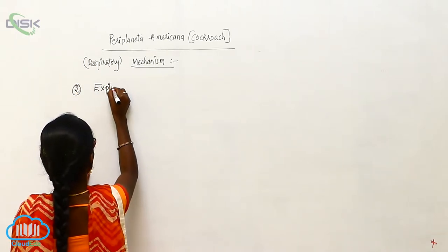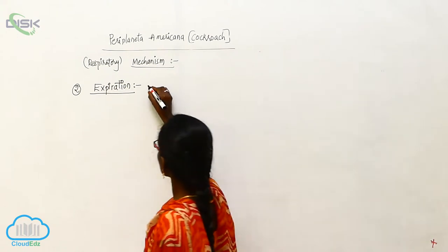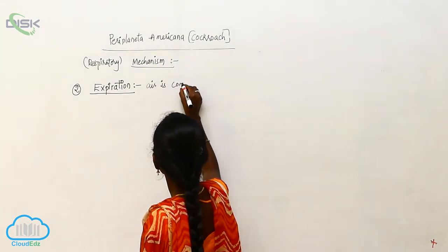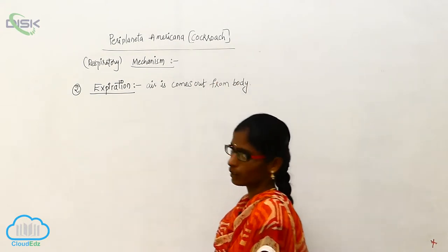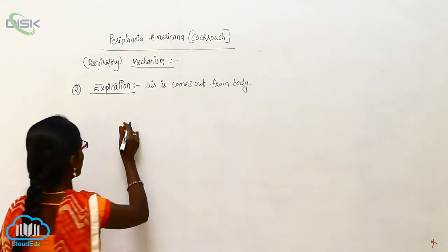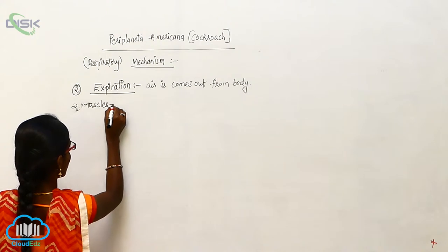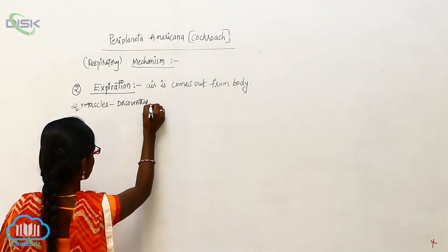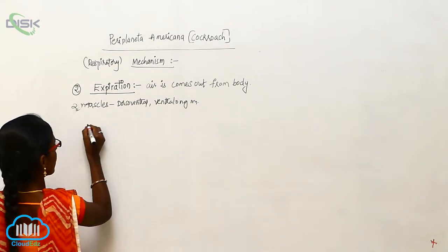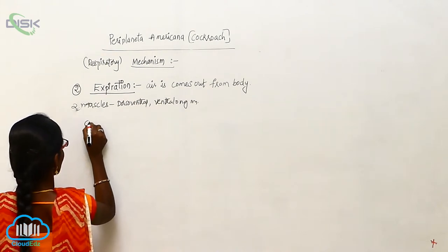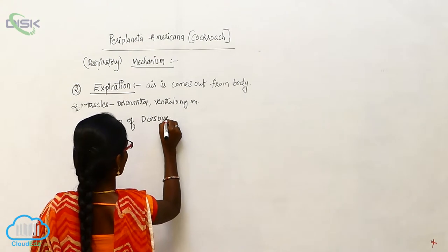The second process is expiration. In expiration, air comes out from the body. In expiration, two muscles are involved: the dorsal ventral muscle and the ventral longitudinal muscle. In expiration, contraction of the dorsal ventral muscle occurs.